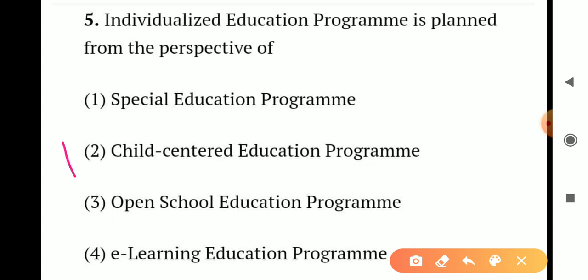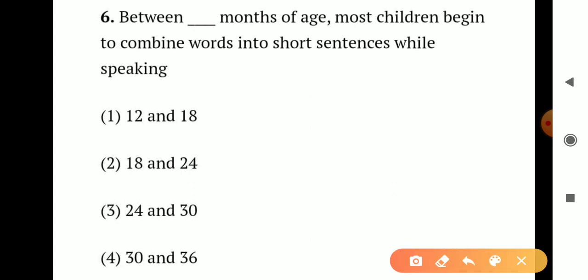Question number 6. Between which months of age do most children begin to combine words into short sentences while speaking: Option 1 - 12 and 18. Option 2 - 18 and 24. Option 3 - 24 and 30. Option 4 - 30 and 36. Between 18 and 24 months of age, children begin to combine words into short sentences. So the correct answer is Option 2 - 18 and 24 months.